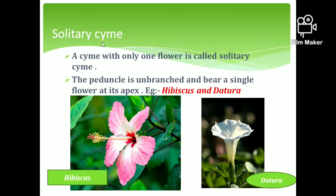The first type of cymose inflorescence is the solitary cyme. In the solitary cyme, there is only one flower. The pedicle is unbranched and bears a single flower at its apex. Examples are Hibiscus and Datura.